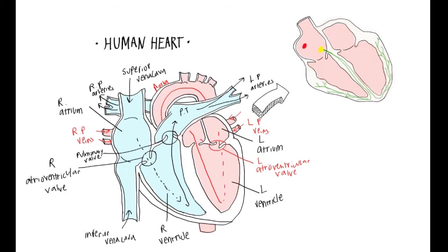This is done by the opening of the aortic valve. As we can see, the aorta branches into smaller arteries. These smaller arteries deliver blood to the upper body, while the larger artery delivers blood to the lower body.